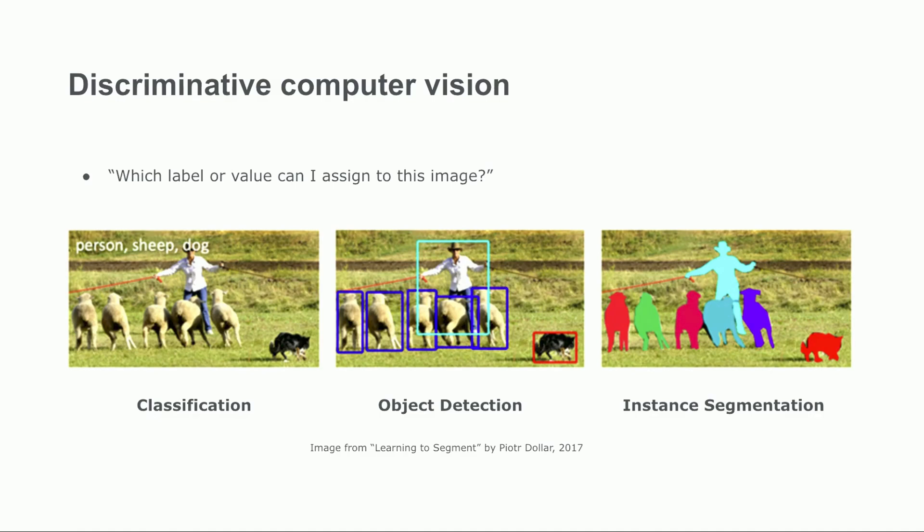Segmentation models provide the finest level of detail by creating masks that precisely separate objects from their background. These masks enable accurate quantification and image manipulation, such as background removal in photo editing software, or estimation of the precise coordinates that a robot arm or a self-driving car need to consider to know when they would collide with an object.